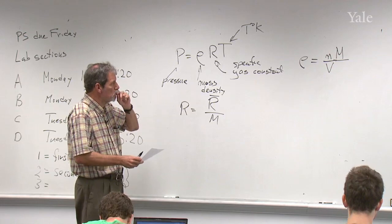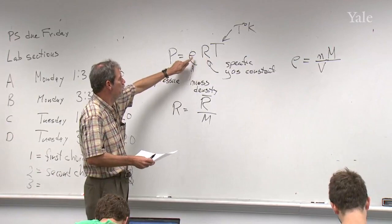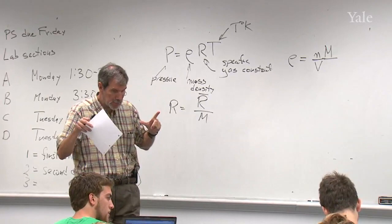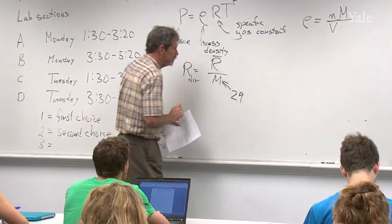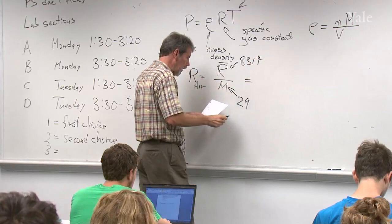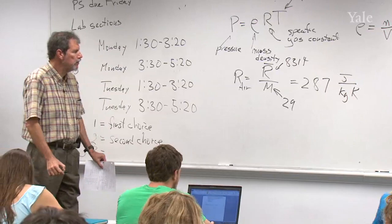The reason we use mass density rather than number of molecules is that in atmospheric science we want to know how dense the air is — we want to work in terms of the mass of the air. We use this form of the gas law because mass density is what matters for atmospheric dynamics.